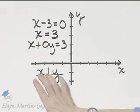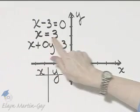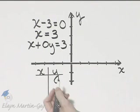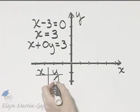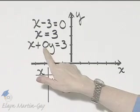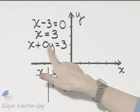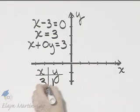But I hope it makes sense to you that ordered pair solutions will have an X value of 3, because no matter what you allow Y to be—suppose you allow Y to be 1—if Y is 1, 0 times 1 is 0, and X must be 3.